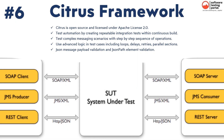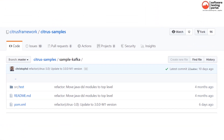Number six in the list is Citrus Framework. Citrus is open source and licensed under Apache License 2.0. Features include: test automation by creating repeatable integration tests within a continuous build, tests complex messaging scenarios with step-by-step sequence of operations, advanced logic features including loops, delays, retries, and parallel sections, JSON message payload validation and JSON path element validation, and IDE support. Here is a sample of the Citrus framework.